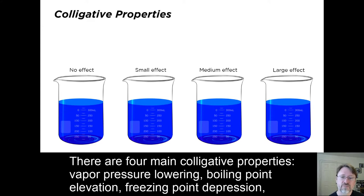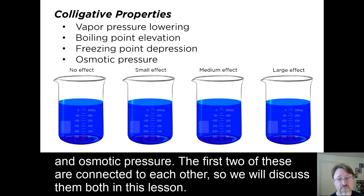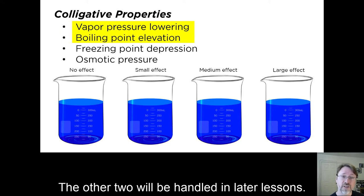There are four main colligative properties: vapor pressure lowering, boiling point elevation, freezing point depression, and osmotic pressure. The first two of these are connected to each other, so we will discuss them in this lesson. The other two will be handled in later lessons.